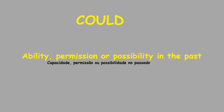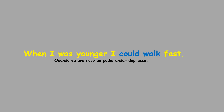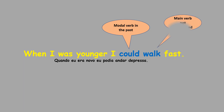Now let's see the word in the past: 'could'. Could is the past of 'can' and it expresses ability, permission or possibility. When I was younger, I could walk fast. You are expressing yourself in the past tense, so the modal verb is in the past — 'could'. The main verb is not conjugated and you are expressing an ability in the past.